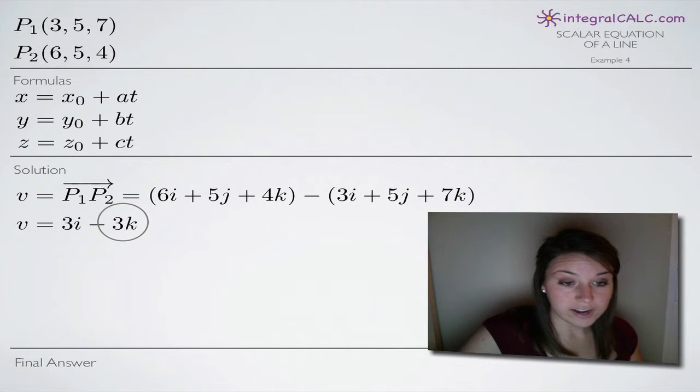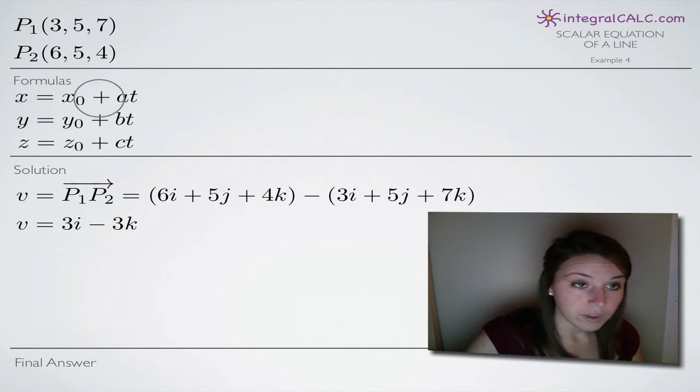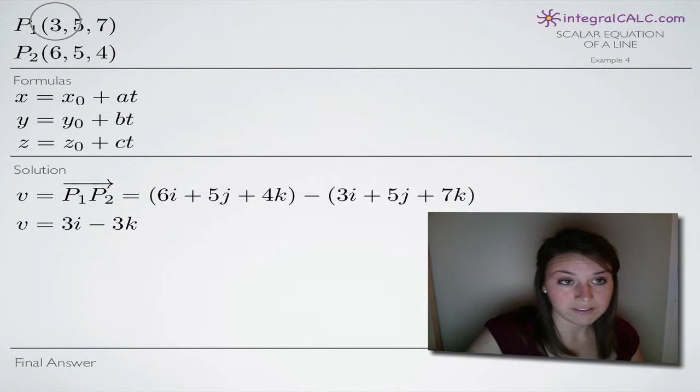So this is our vector, and now we're going to use this vector along with the point p₁ to plug into these formulas and find our scalar equations. So we're going to plug in 3, 5, and 7 for x₀, y₀, and z₀ respectively, because remember this coordinate is in the form x, y, z. So that plugs in for those three here.